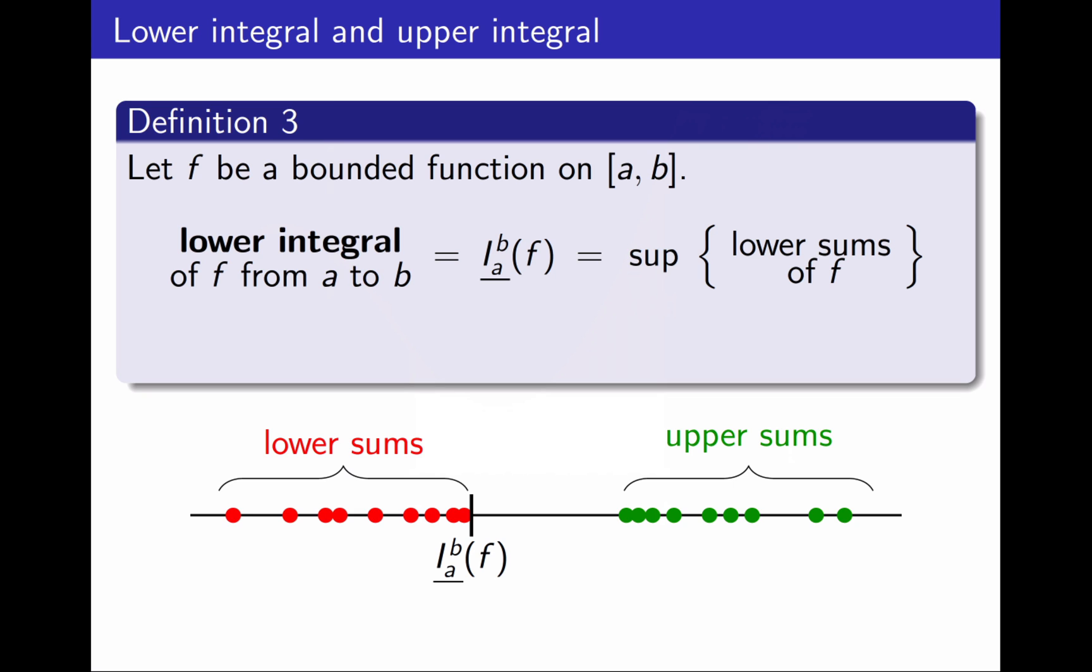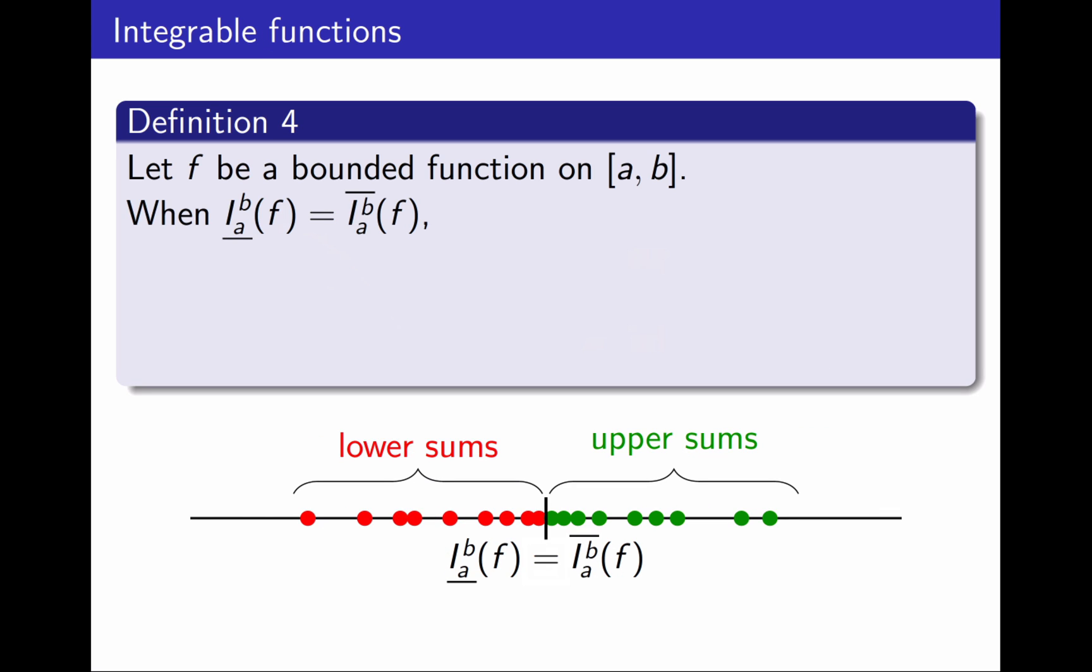Alternatively, I can use the upper sums. I define the upper integral of f from a to b, and I will write it using the same symbols, but with a line over instead of under it, as the infimum of all the upper sums. Now I have two definitions of integral. Which one do I choose? Since every lower sum is less than or equal to every upper sum, I can conclude that the lower integral is less than or equal to the upper integral. And now I have two cases. The good case is when they are equal. In that case, I say that f is integrable on [a,b], and I define the integral to be the common value.